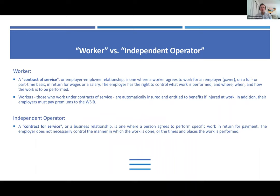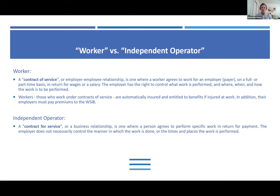A very common issue in right-to-sue applications is determining whether a party is a worker or an independent operator. This distinction is important because independent operators generally do not require WSIB coverage and therefore are not covered under the Act and can bring an action in court against an at-fault party. Generally speaking, workers and independent operators can be distinguished along the lines of their respective contracts. A worker has a contract of service; an independent operator has a contract for service. A contract of service usually resembles an employer-employee relationship, whereas a contract for service usually resembles a business relationship.